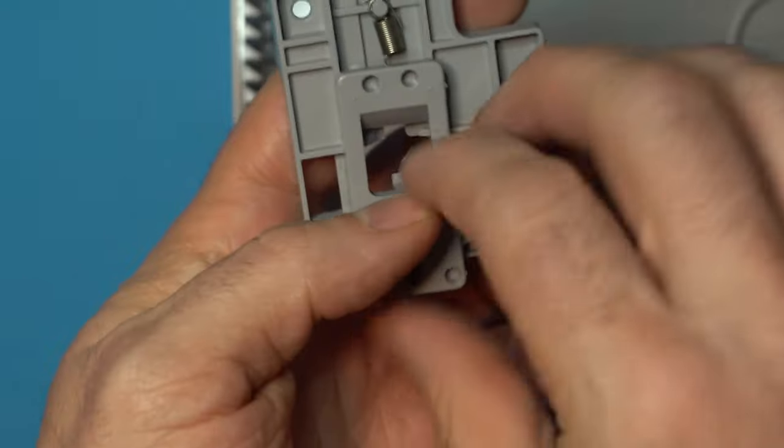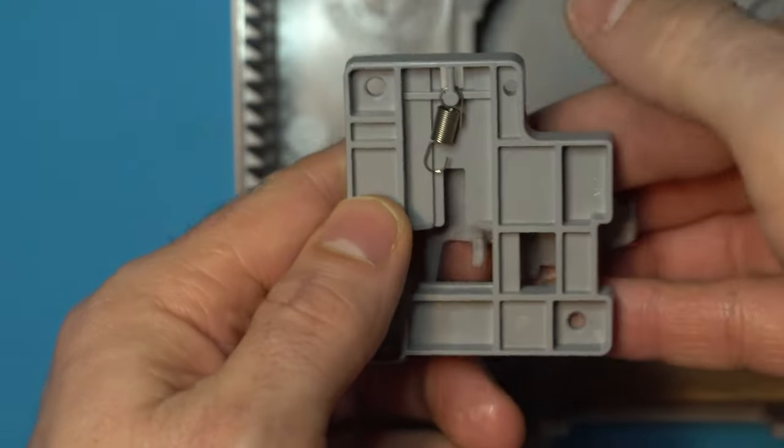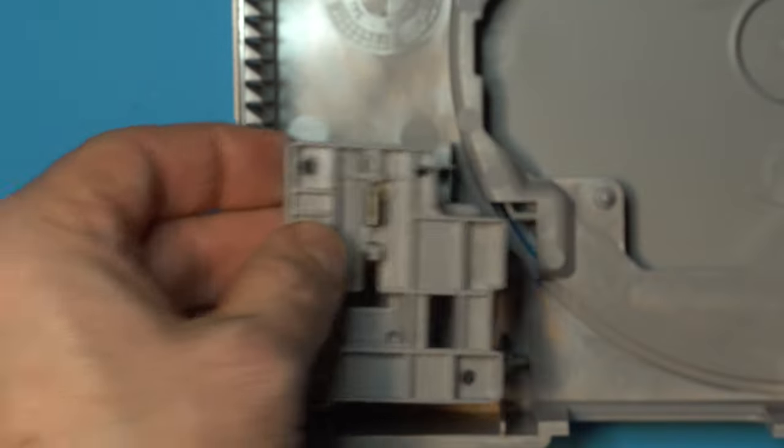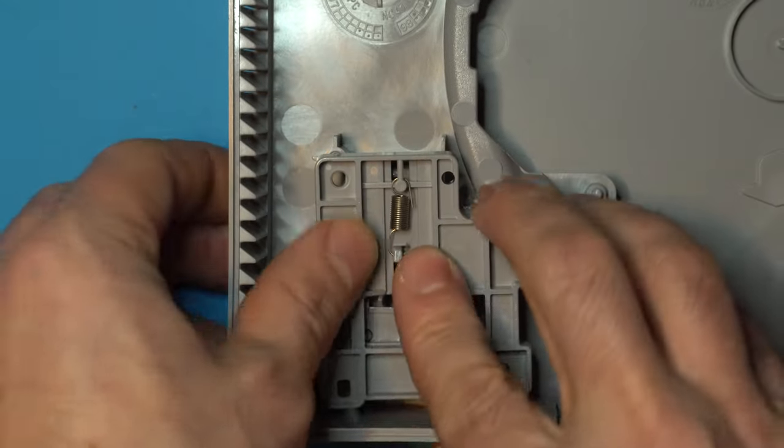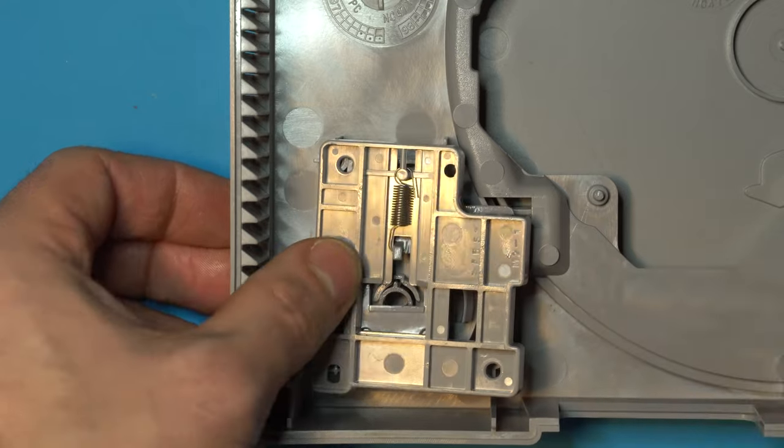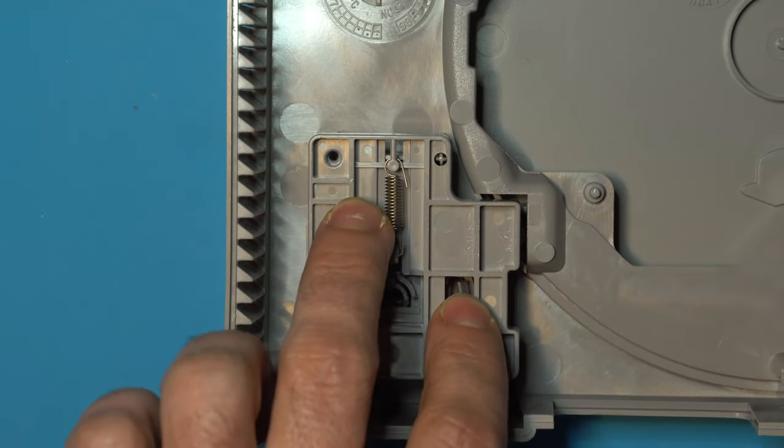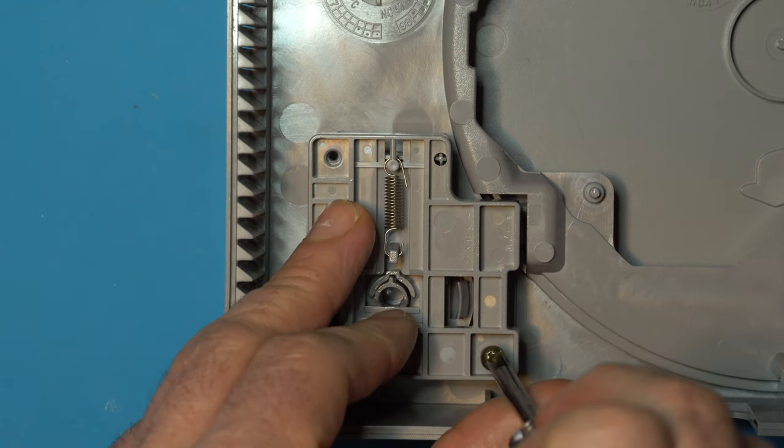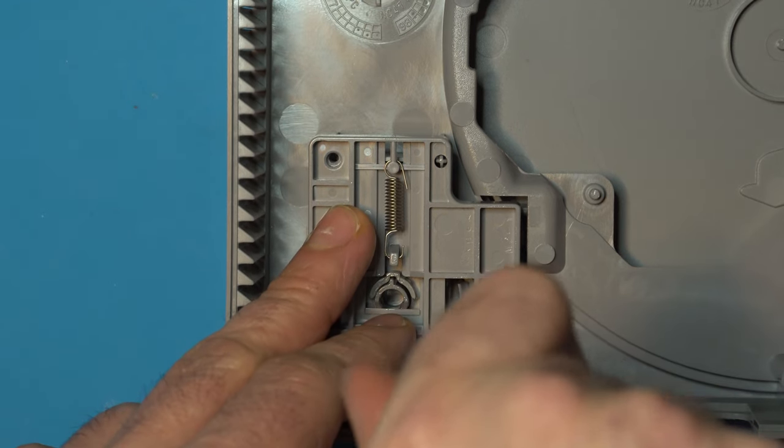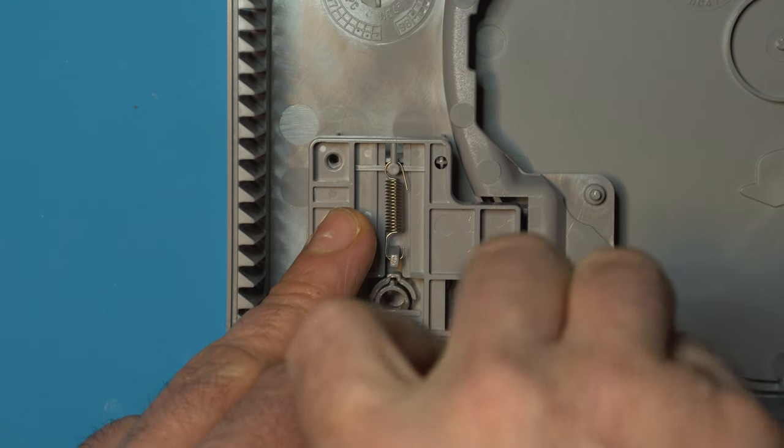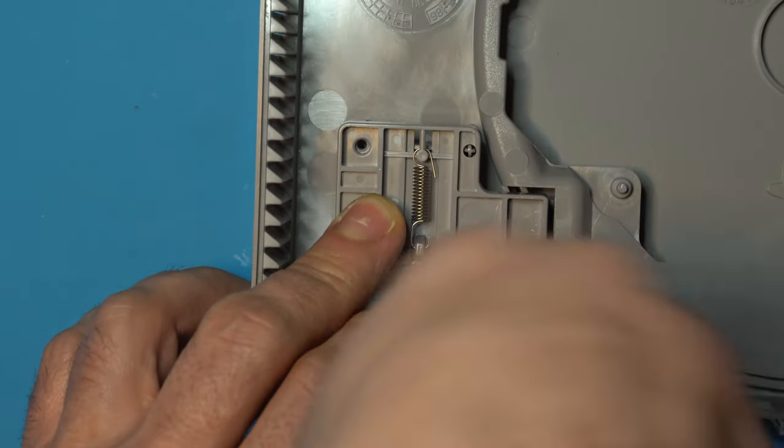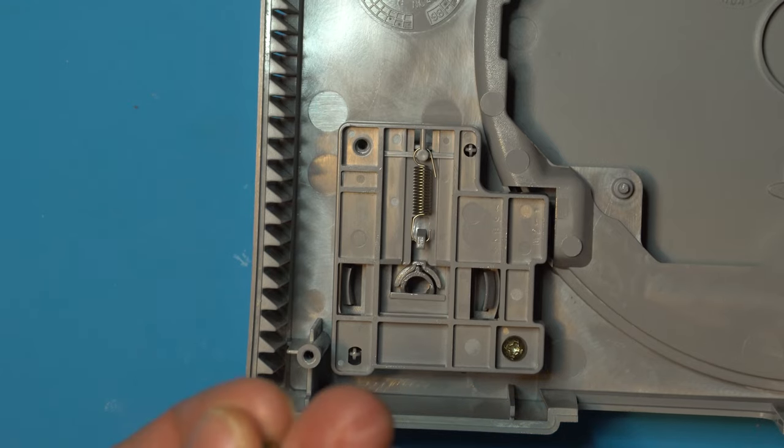We'll take our spring loaded assembly, put our spring back on, and reinsert this back where it needs to go. You'll want to hold that down with a finger or two while you grab the hardware. When you put these screws in, make sure you turn counterclockwise gently until you hear a little click, then you can go ahead and turn that in.